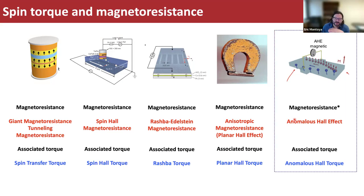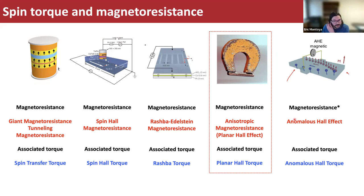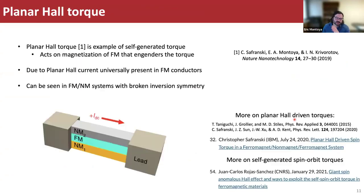The question is: if we consider the anomalous hall effect to be magnetoresistance-like, is there an associated anomalous hall torque? That will be the topic of today's talk. But first, I'd like to briefly go over the planar hall torque and a toy model to set up pedagogically how these anomalous hall and in-plane hall torques work. The planar hall torque is an example of a self-generated torque — this torque acts on the ferromagnet that engenders the torque.